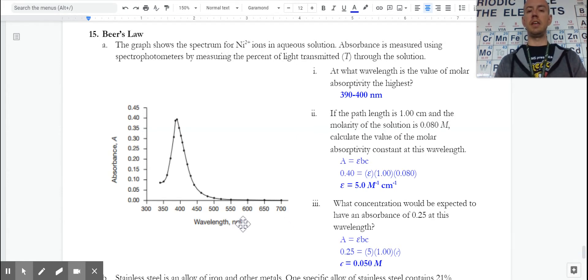And the reason it's centimeters, even though the graph shows nanometers, remember, the nanometers are the wavelength of light. The centimeters is what goes in here as our path length.